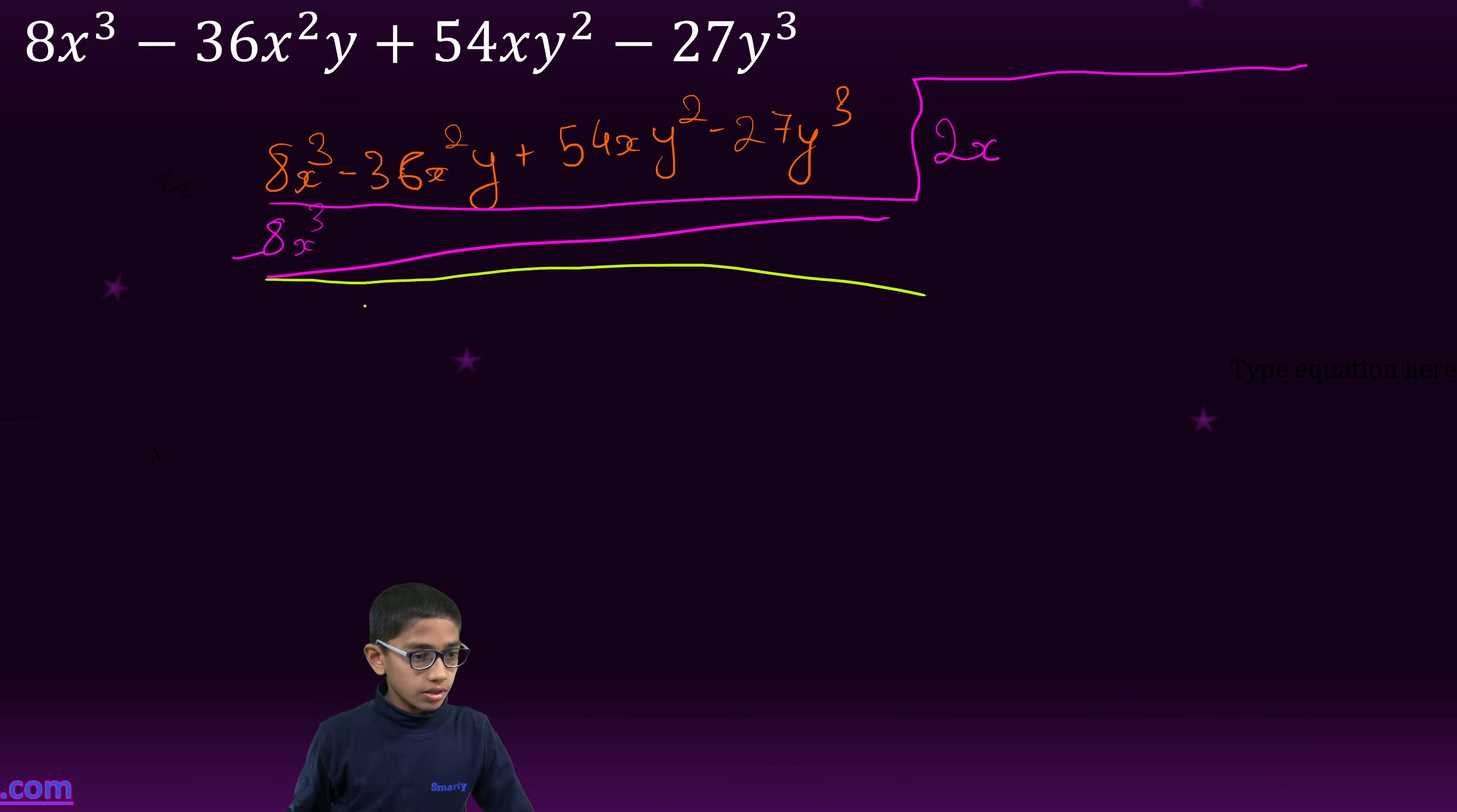Minus 36x²y plus 54xy². We will first take down the first 3 terms only. These 3 minus 27y³.